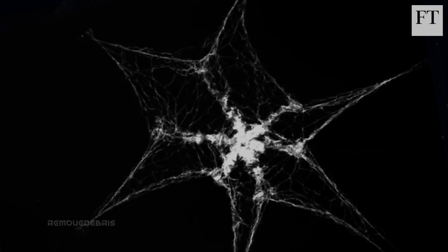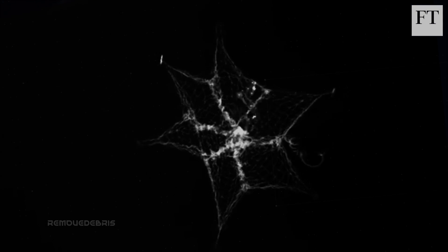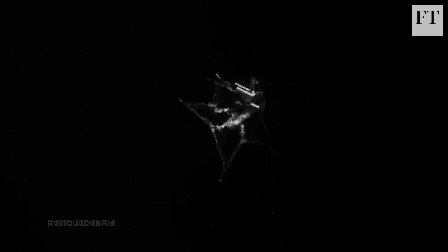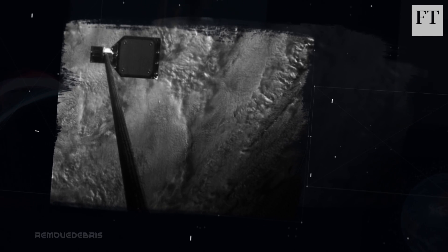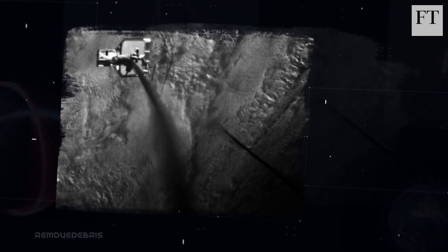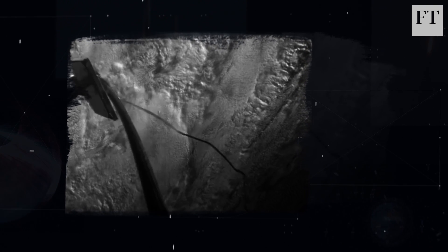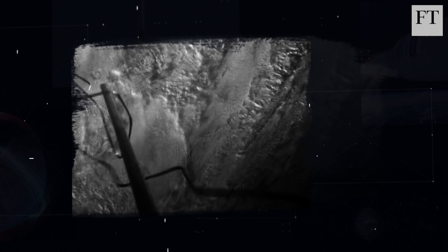Last year, the Remove Debris Project, a consortium led by Surrey University, successfully tested a net to snare space junk. In February, it managed to catch a piece of space junk using a harpoon. In both cases, the plan is to drag the captured junk down into the Earth's atmosphere, where it should harmlessly burn up.